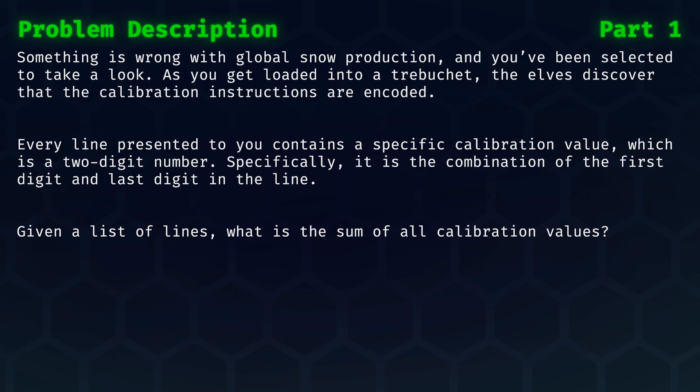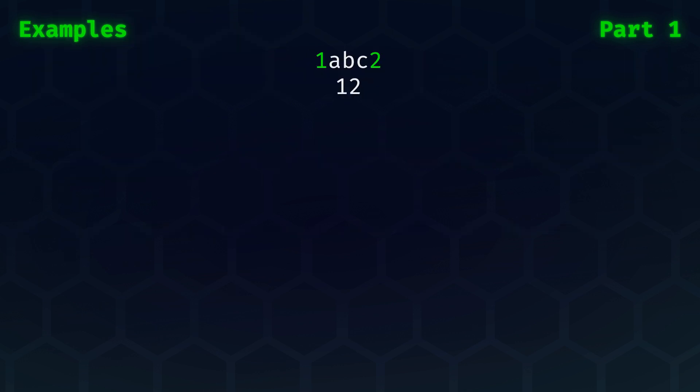Let's take a look at the examples. In the first example, we see that the digits are at the outer ends of the line, making for a calibration value of 12. In the second example, the numbers 3 and 8 are hiding somewhere near the center. The value is 38.